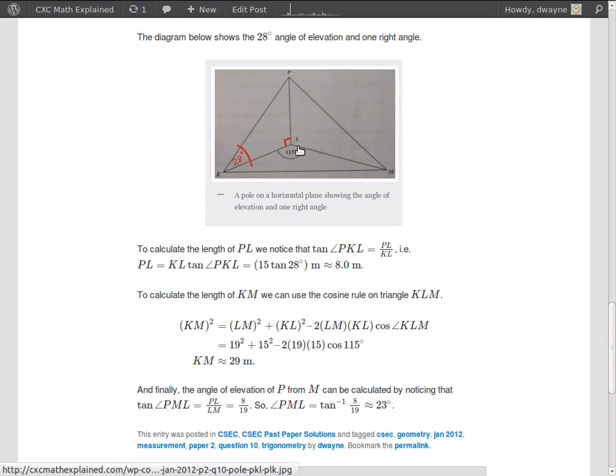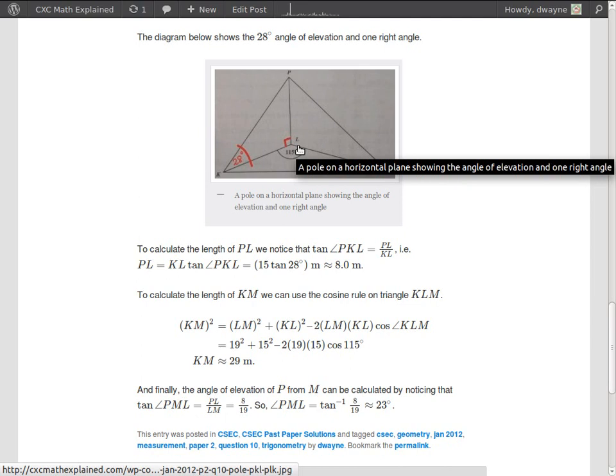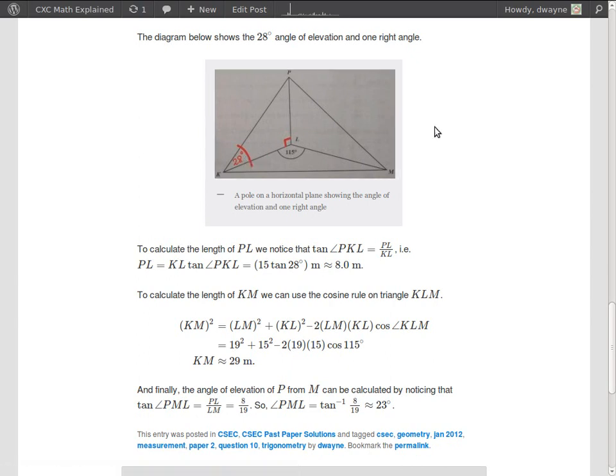Alright, so we want to calculate this length. We know the length of KL, the length of KL is 15 meters. And we know the size of this angle, 28 degrees. So let's see which trigonometric ratio we can use.